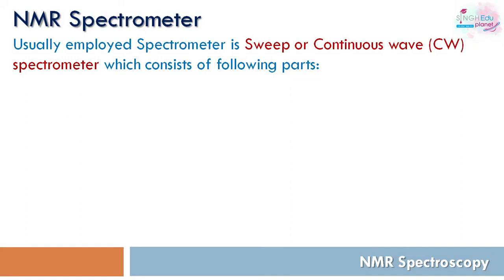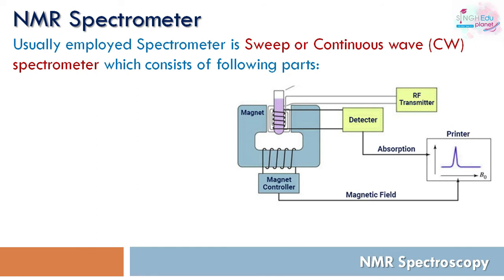The device used to record the spectrum is called the NMR spectrometer. The type commonly used is the sweep or continuous wave (CW) spectrometer. In this CW spectrometer, we have a specific arrangement of components, which we will now go through.